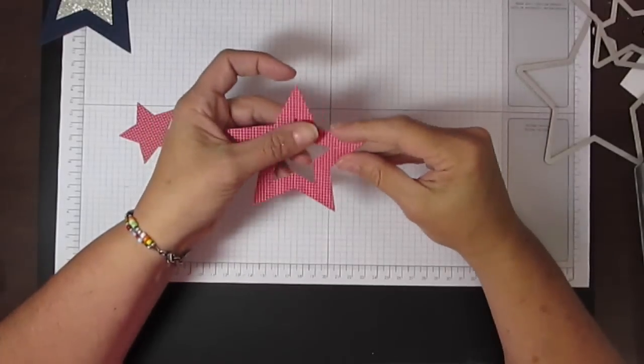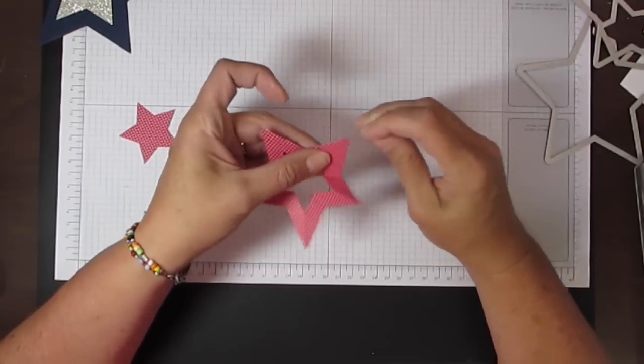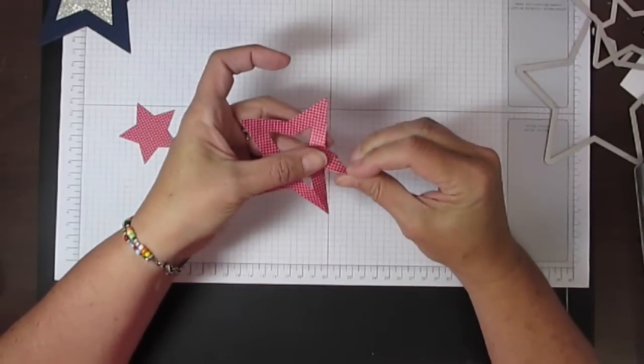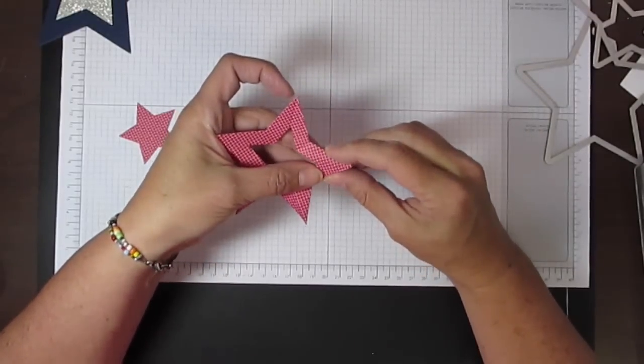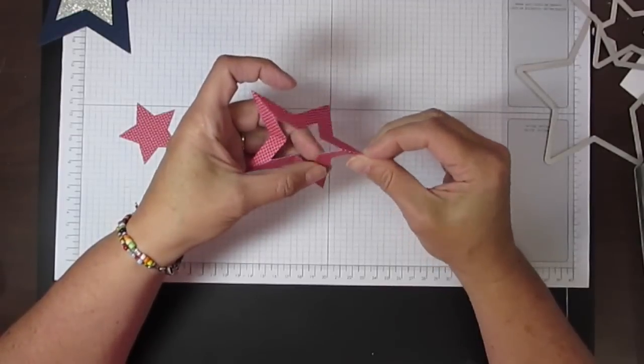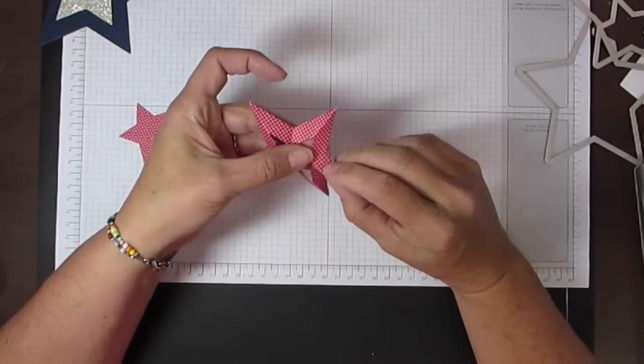Then what you're going to do is take those score lines and you're going to mountain fold and valley fold. The mountain fold is on the big point, the valley fold is on the little point on the inside. I missed that one—I have to go back and score that one.